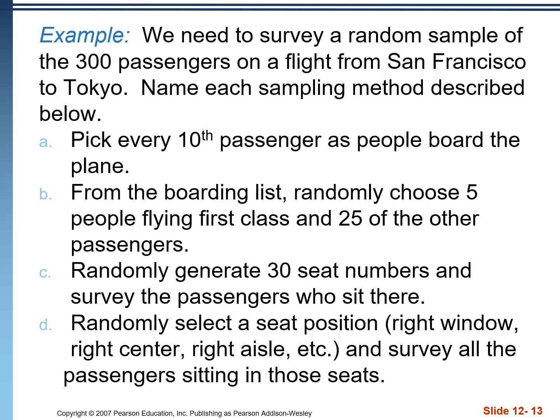Here's an example: we need to survey a random sample of 300 passengers on a flight from San Francisco to Tokyo. Name each sampling method described. Part A: pick every 10th passenger as people board the plane. Remember, we would want to randomly start at a specific number. This would be a systematic sample.